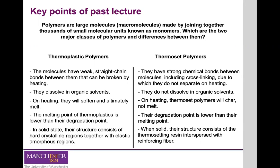What will happen if we provide heat to thermosets is that we will degrade these materials. Also, because of these strong covalent cross-links between the polymeric chains, normally these materials, once they have formed a three-dimensional network, are not dissolved in organic solvents. But thermoplastics, because of these weak links, we can dissolve them using organic solvents. Normally, the melting points of thermoplastic materials are lower than the degradation points, and in the case of thermosets, the degradation point is normally lower than the melting point.